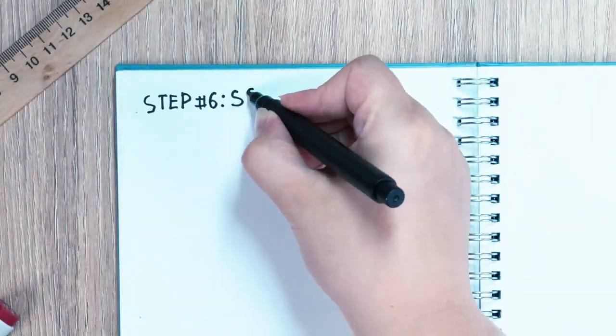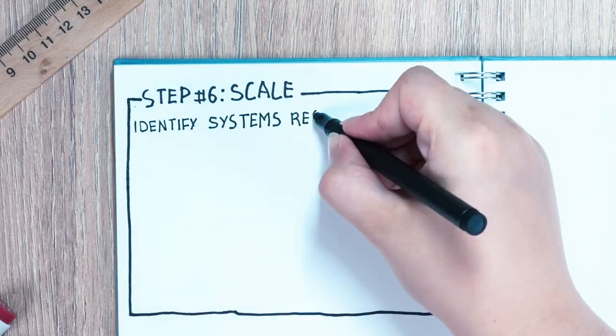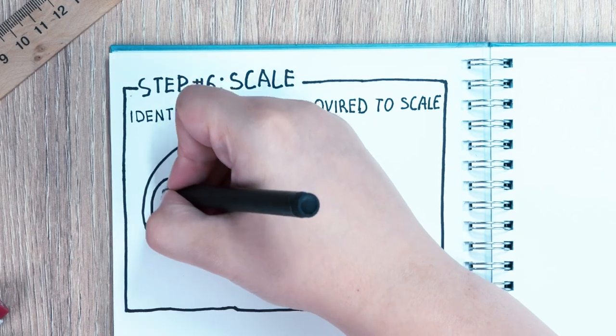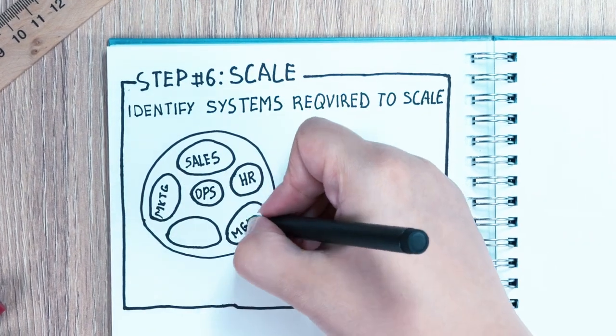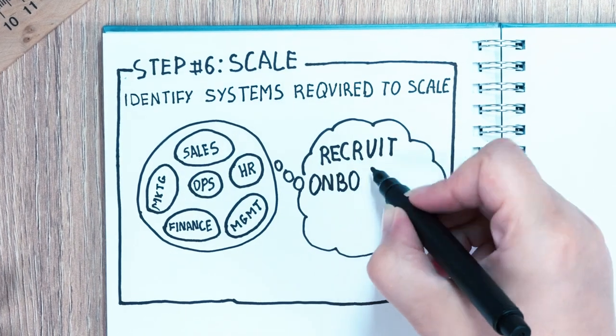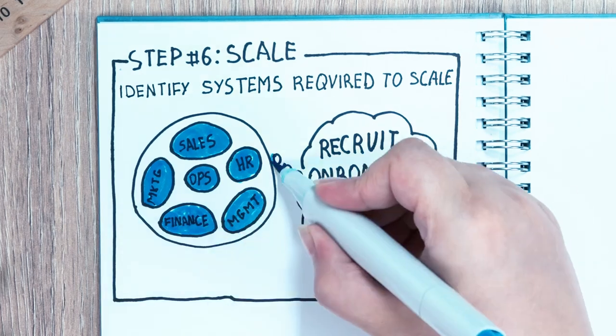Step number six is scale. This is where your systems required for growing and scaling your company are identified. This includes sales, marketing, operations, HR, finance, and management systems. Jennings also explains how this new systems thinking approach must be embedded into how you recruit, onboard, and manage all team members.